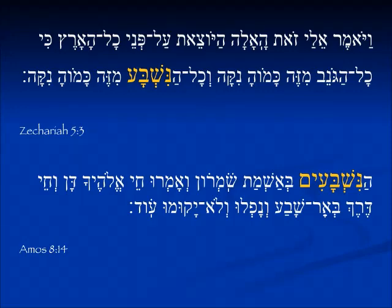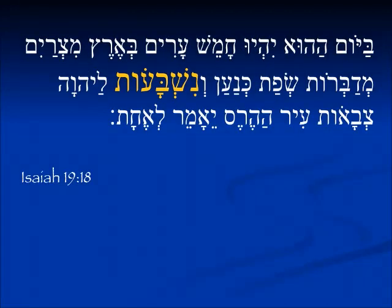In Amos 8, again the people who are swearing — remember the participle can mean 'the people' — hanishbaim ba'ashmat shamron, those who are swearing by the shame of Samaria. So we see a quite normal plural form: nishbaim. Here's a feminine plural, nishbaot, lehovah tzvaot — the ones who are swearing. It's feminine because it's talking about cities, and cities are always feminine. They are swearing by Jehovah of hosts.